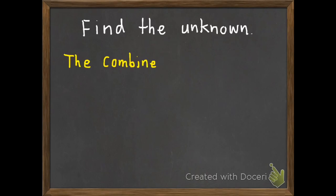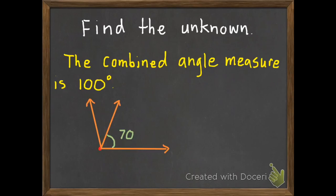Our first example, we need to figure out the unknown. And the combined angle measure is 100 degrees. So with these two angles combined, it equals 100 degrees. We know one of our two angles, which is 70 degrees. But we don't know our other angle, which we've written as x. And so that we need to figure out.